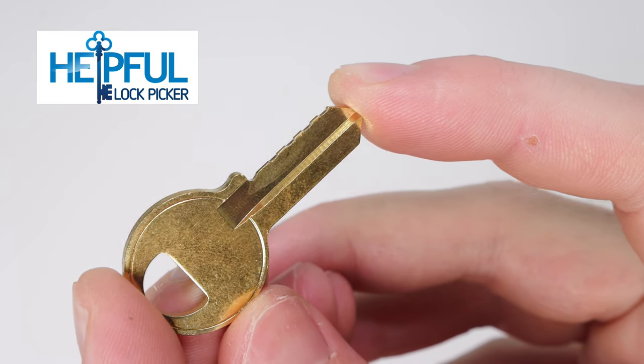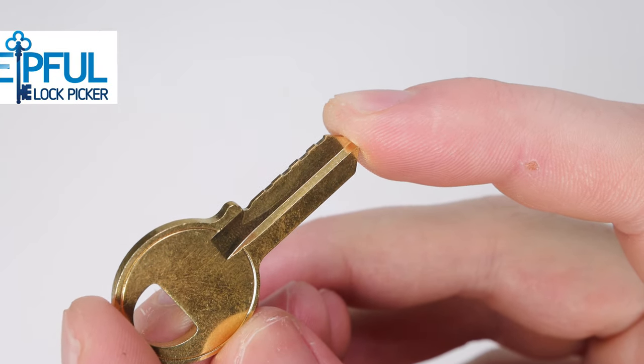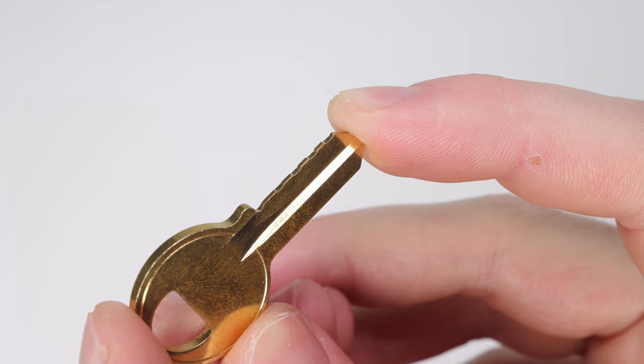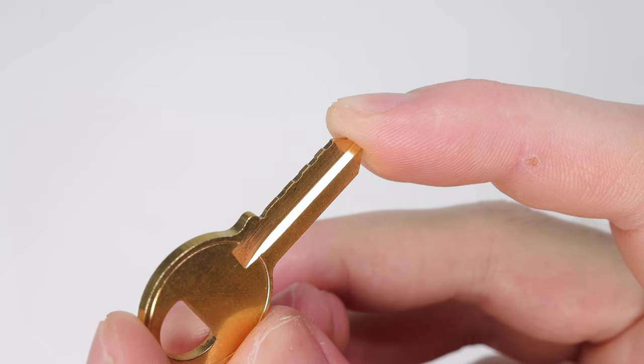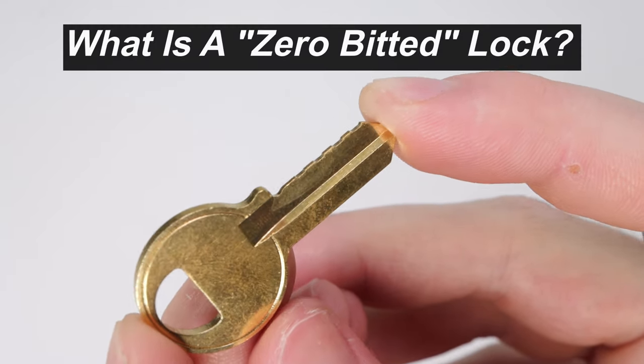Hey guys, how's it going? This is Helpful Lockpicker here. In the video I have for you today, I'm going to answer a question that many of you may have: What is zero bidding and why does my key look like this?